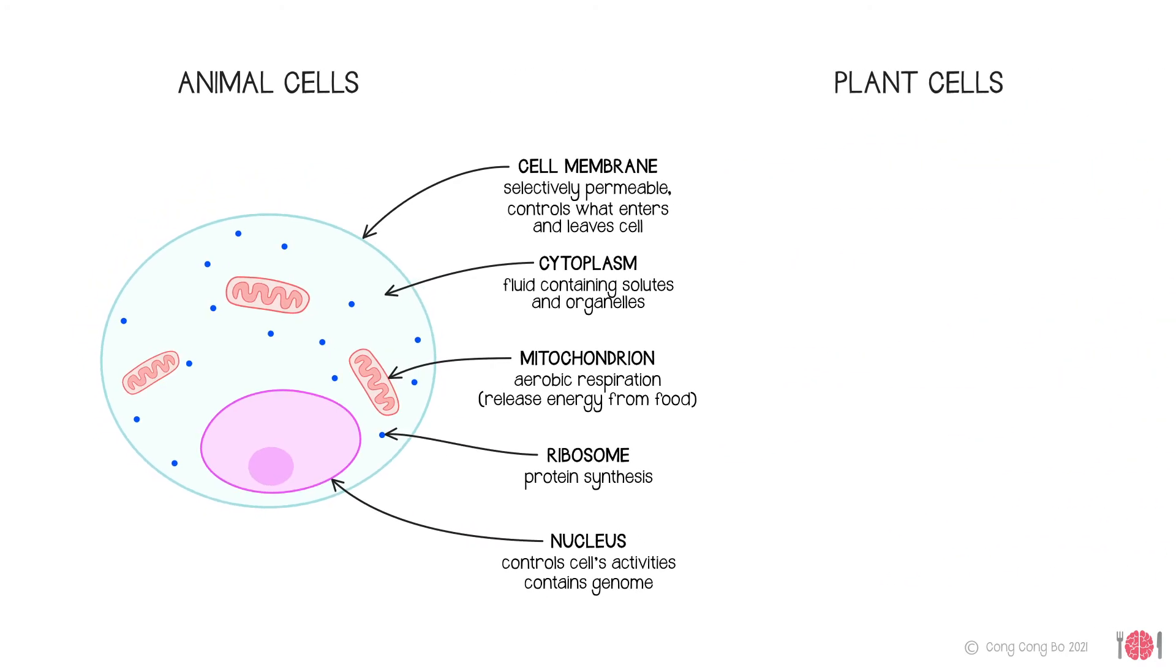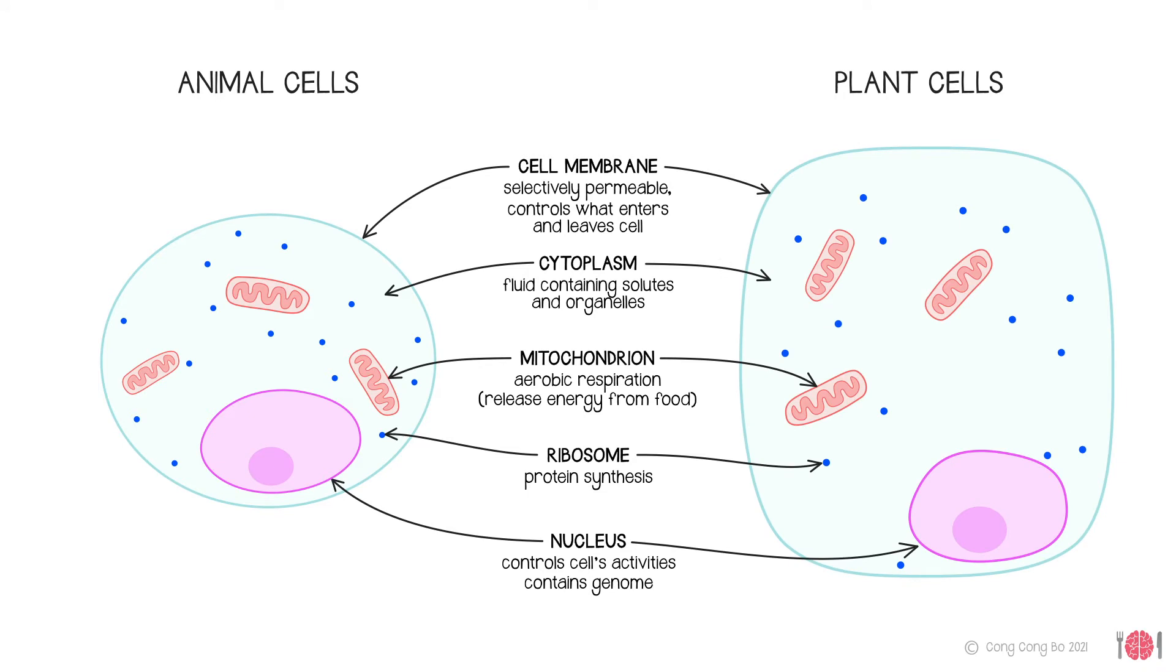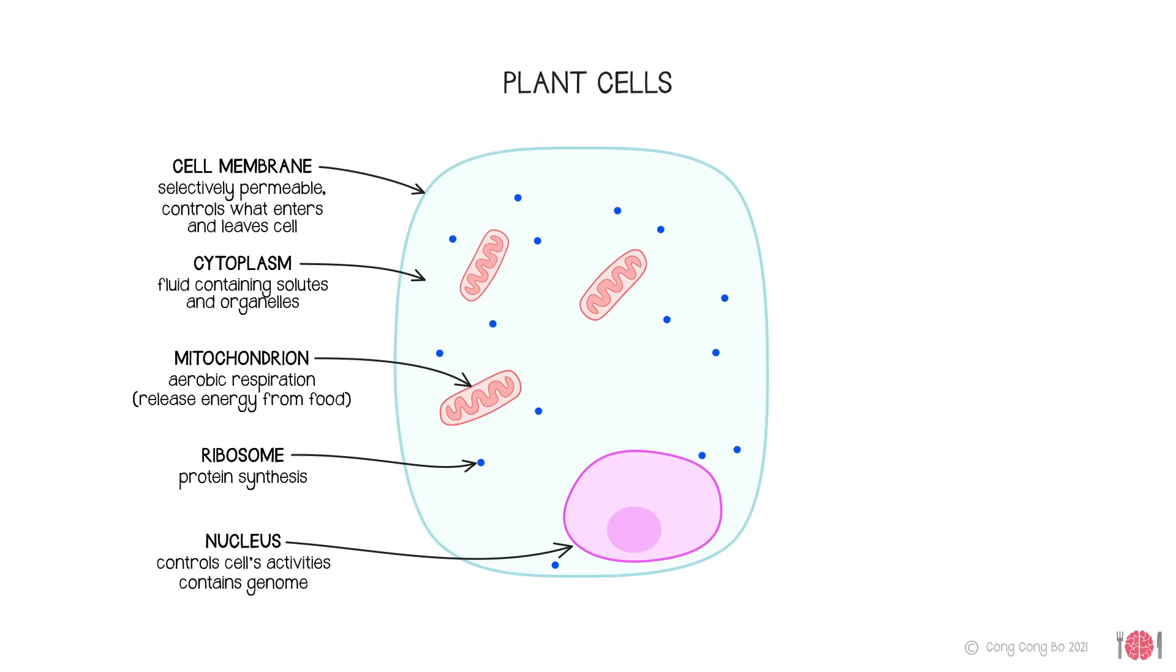Moving on to plant cells, these have all the same organelles as animal cells and a number of extra features. Ever wondered why plants look green? Plant cells, those above ground at least, are packed with chloroplasts, membrane-bound structures which contain the pigment chlorophyll.